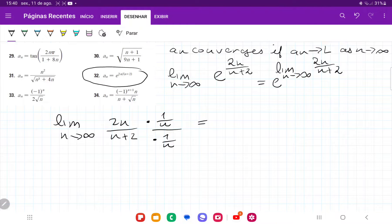This is going to be the limit as n approaches infinity of 2n divided by n. That is just going to be 2 on the top. And then on the bottom, n divided by n is 1 plus 2 over n. The limit as n approaches infinity of 2 over n, this is like 2 divided by a very large number. This tends to 0.